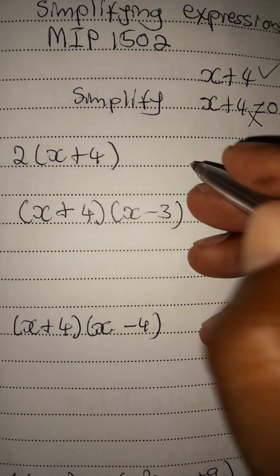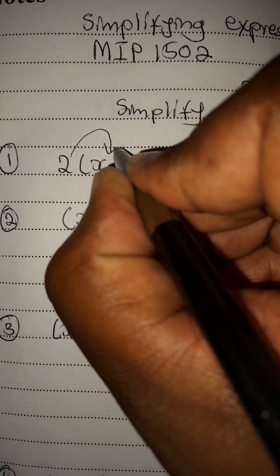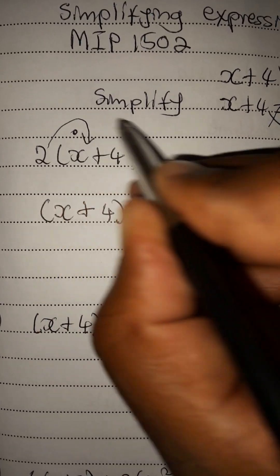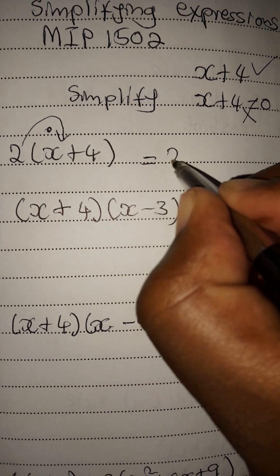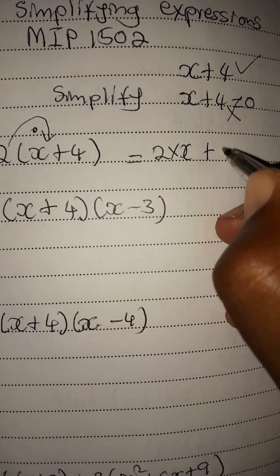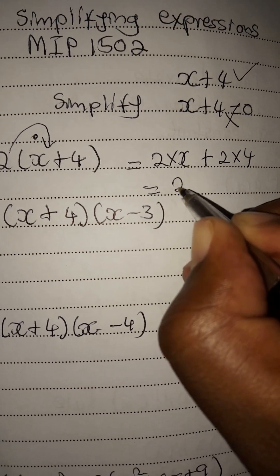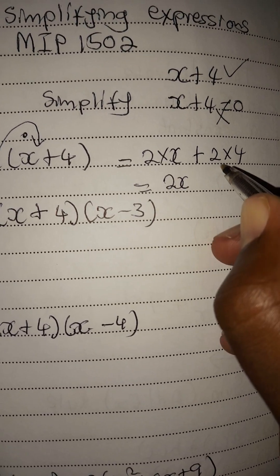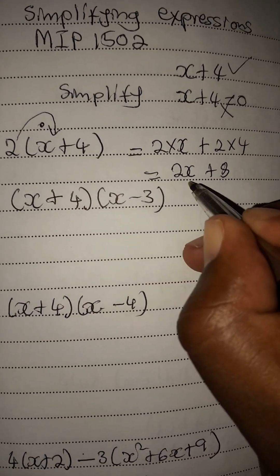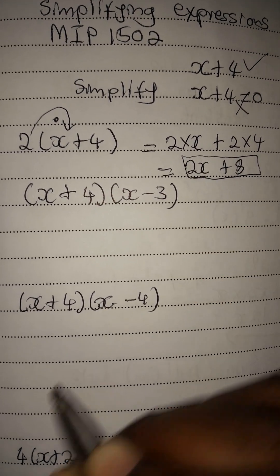Let's simplify the first expression. We are going to use what we call the dolphin method — you can see there's a bigger dolphin here. This 2 will multiply everything inside the bracket, so we have 2 times x plus 2 times 4. Two times x is 2x, and two times four is 8.